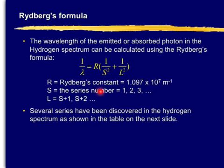S is called a series number. Starts from 1 and 2 and 3 and so on. L is just one more than S. So S plus 1, S plus 2 and so forth. Several series have been discovered in the hydrogen spectrum as shown in the table on the next slide.